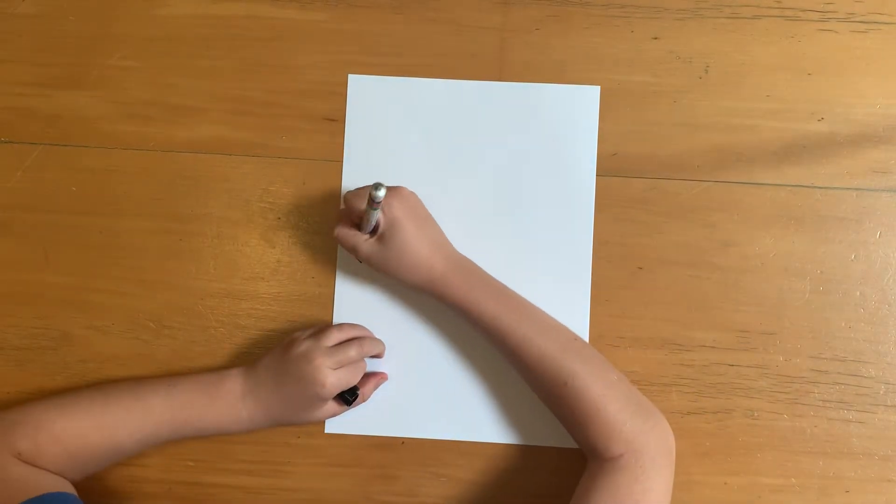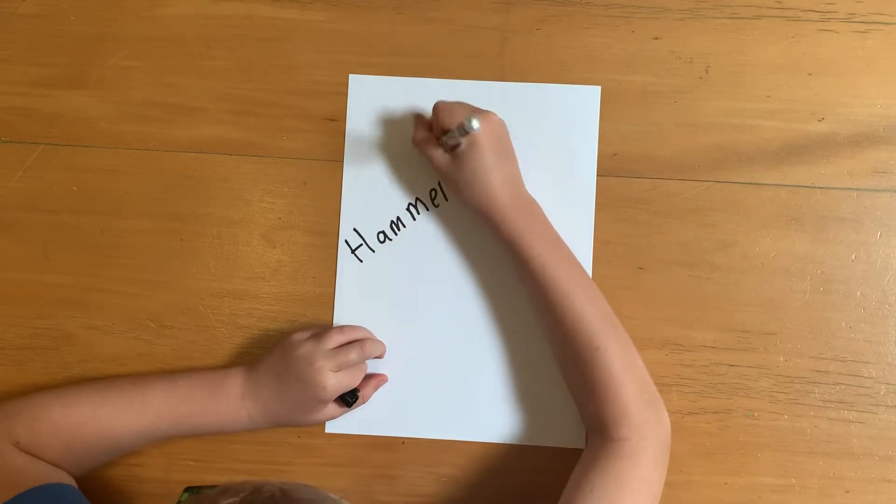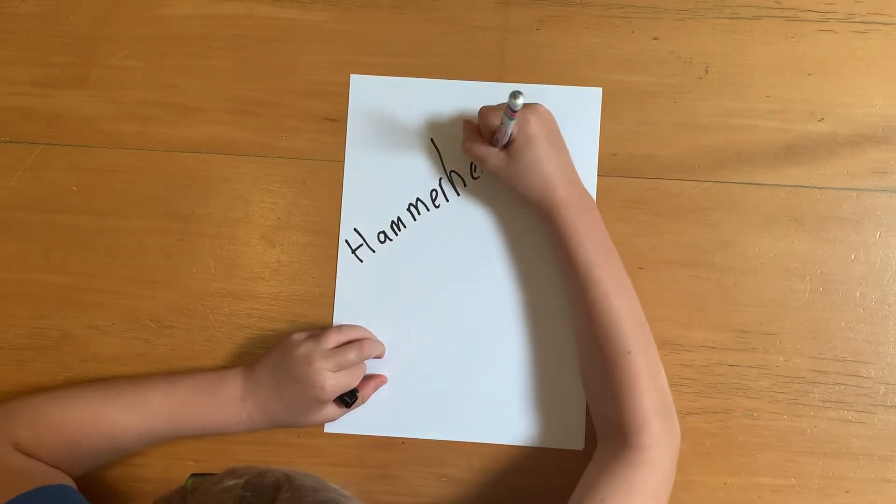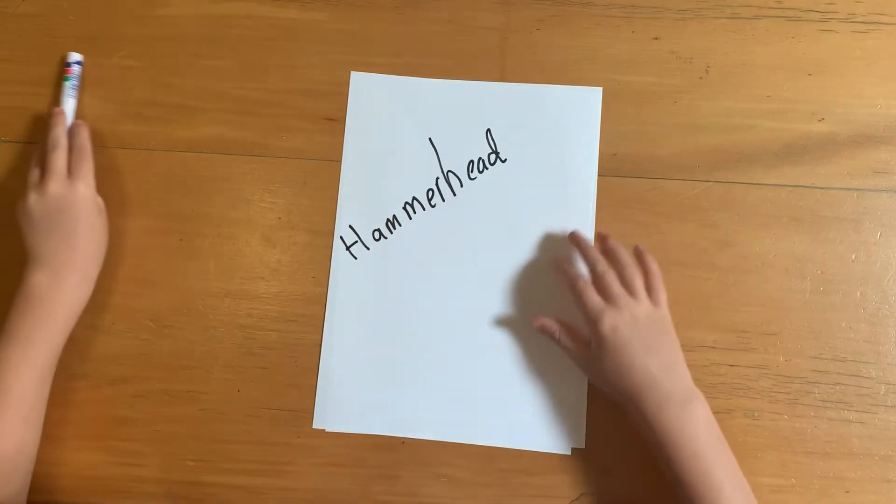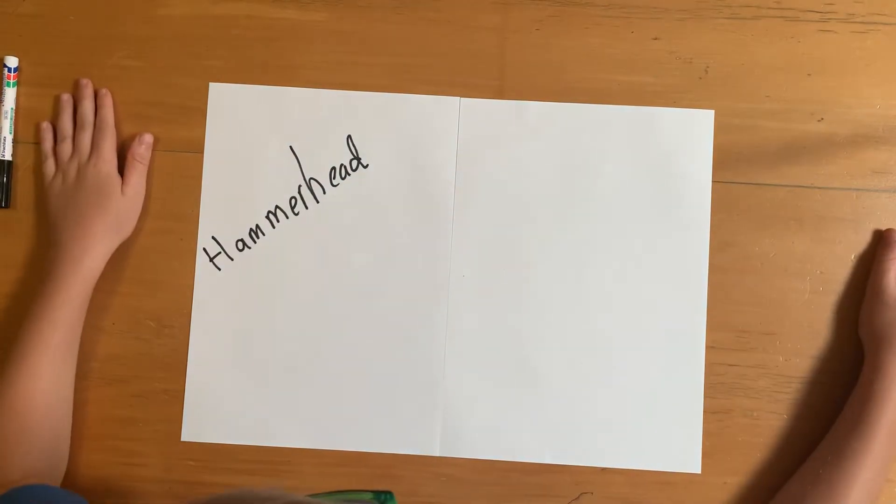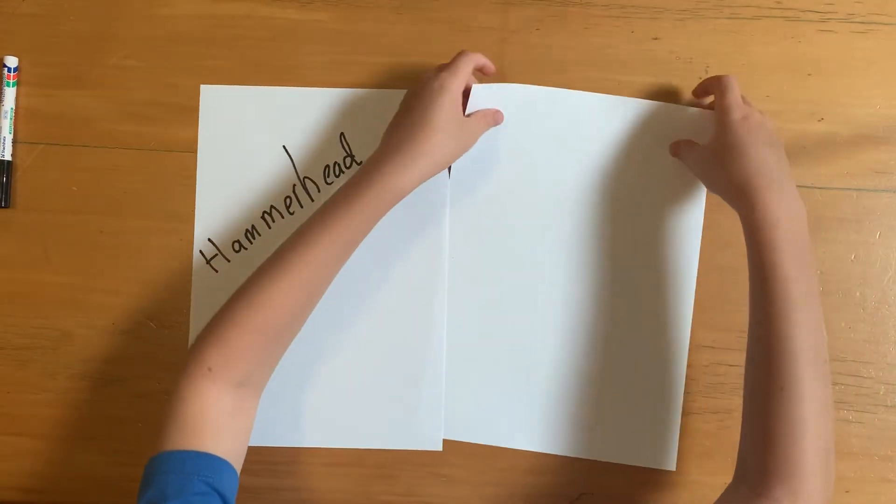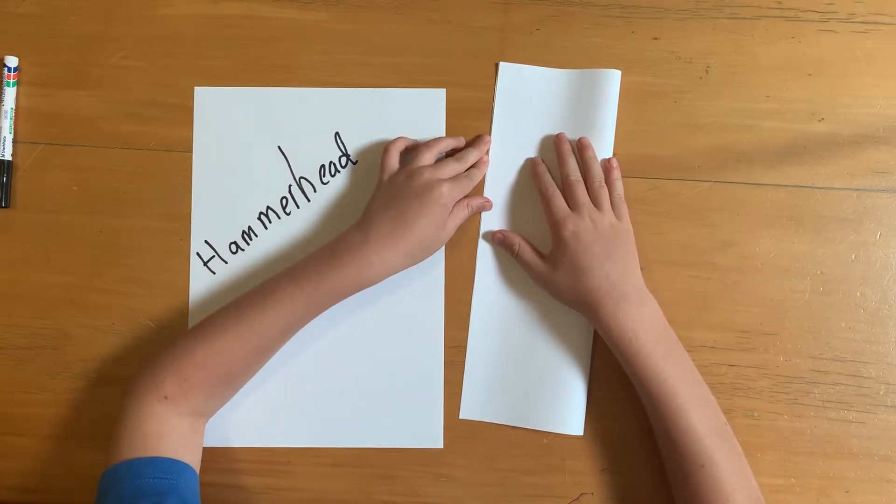Hey guys, today we're going to be making the hammerhead paper airplane. To start off you're going to need two sheets of A4 paper, and you have to start by folding the very right page left in exact half.